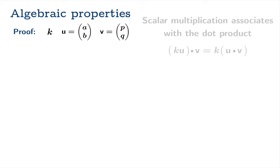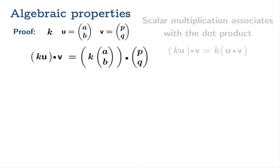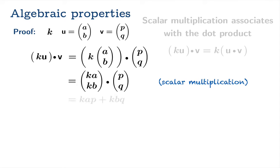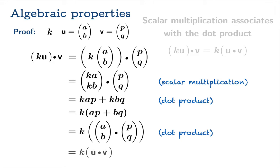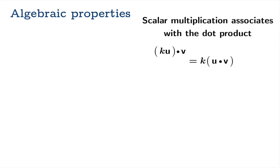For the proof, here are components for the vectors and we'll use brute force. We replace the components and carefully apply our definitions — here's scalar multiplication, here's our dot product. We use algebra to factor out the k, recognize a dot product, and recognize our definitions of u and v. So ku dot v is the same as k times the quantity u dot v — we get the associativity property.